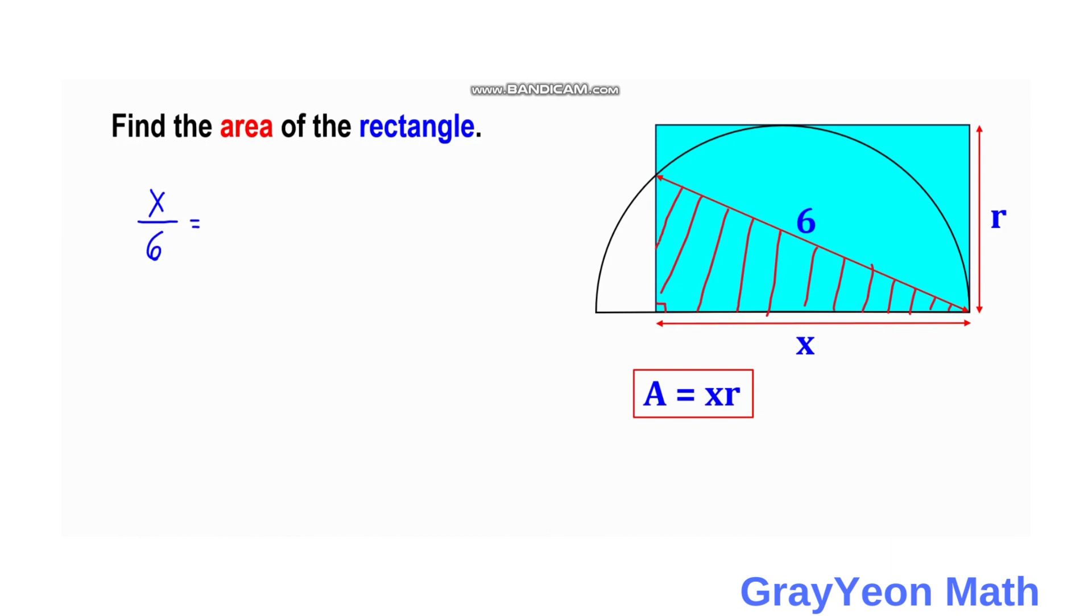It will be equal to a ratio of a right triangle. If we draw a line from these two points, this is a right triangle similar to this triangle. Then if we shade this, that is the triangle.